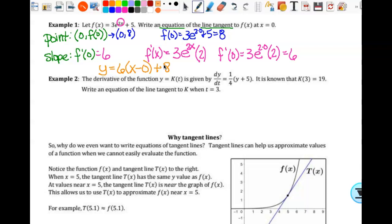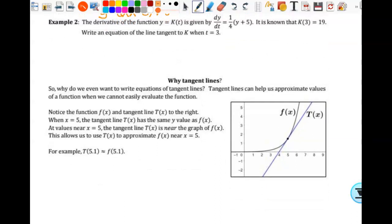So then this one says the derivative of the function y equals k(t) is given by this derivative. It is known that k(3) equals 19. Write the equation for the line tangent to k when t equals 3. So I need a point and I need a slope. So my point is going to be (3, k(3)). They did not give me a k function. Do I freak out? No. The answer is always no. Do I know what k(3) is, though? What is it? 19. They told me that right there. So this is actually (3, 19).